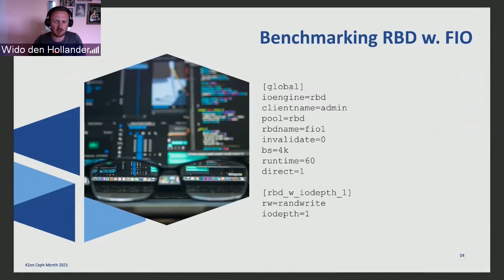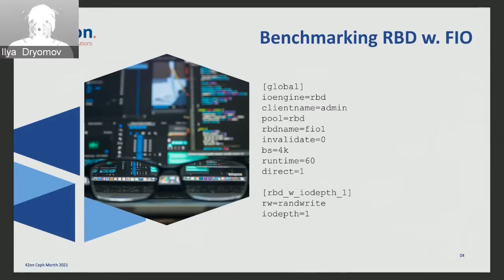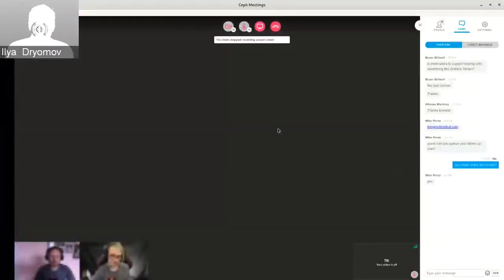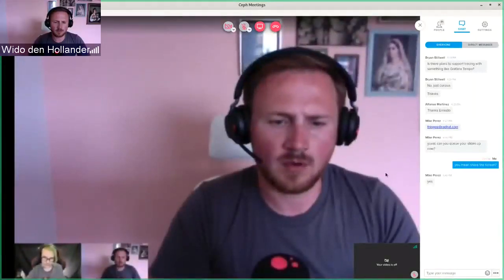Question: Are you sure that with direct equals 1 it will still send the flushes? Response: I think so. This was done to address the discrepancy between FIO and RBD bench, because RBD bench has behaved this way — sending a flush at the beginning of any benchmark — for many years. FIO wasn't doing this, and we were getting complaints that RBD bench results and FIO results were vastly different. The intent of the change was to do it even with direct equals 1, but I wasn't involved so I'm not 100% sure. It's just something I wanted to bring up.